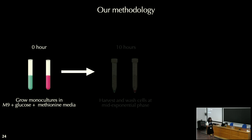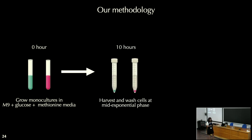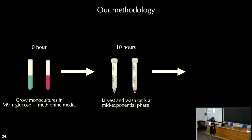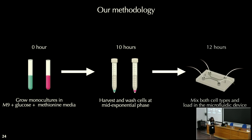I harvest them at mid-exponential phase, because that's when the wild type cells tend to leak the most amino acid. I wash these cells thoroughly to get rid of amino acids in the extracellular environment, then mix them in a specific ratio, load them in the microfluidic device, and start imaging them.